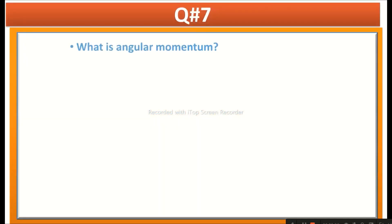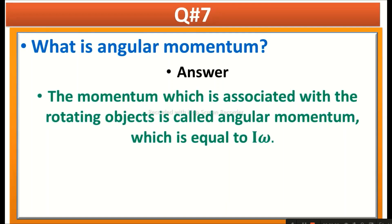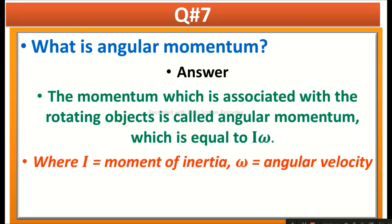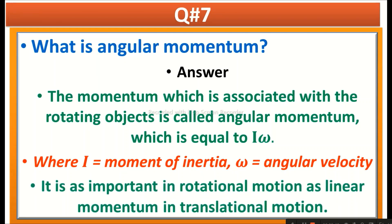The next question is: What is angular momentum? Answer is the momentum which is associated with the rotating objects is called angular momentum, which is equal to I omega where I is equal to moment of inertia and omega is angular velocity. It is as important in rotational motion as linear momentum in translational motion.